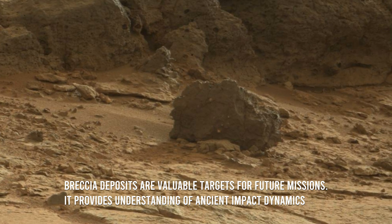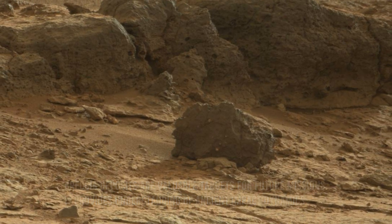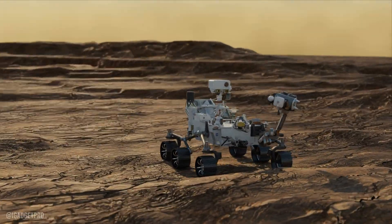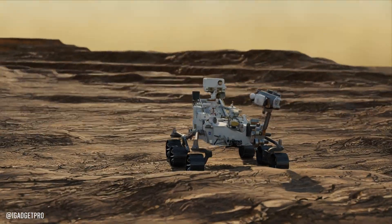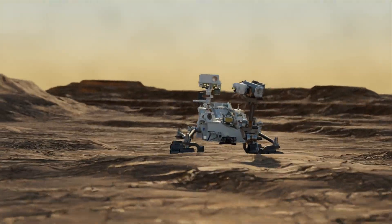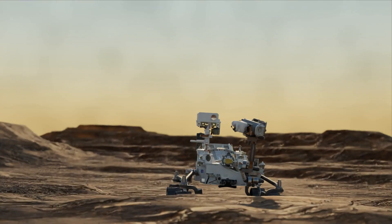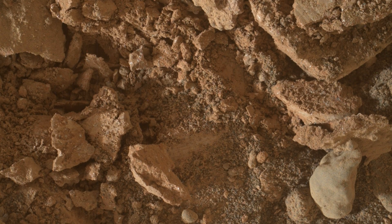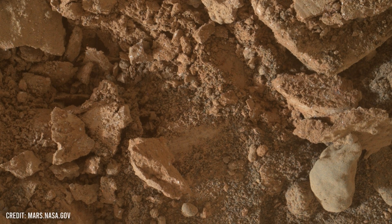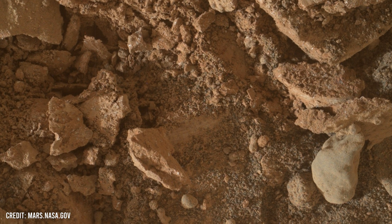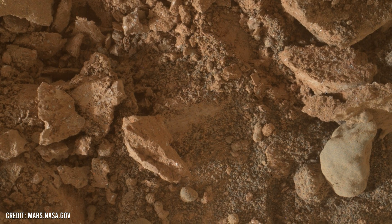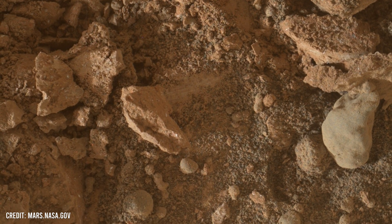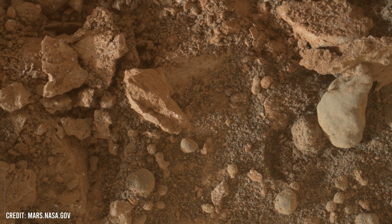Impact pressure rocks are not evenly distributed across the Martian surface. These rocks may have preserved traces of past Martian life or organic molecules within their protective matrix. Scientists are eager to study them in greater detail to unlock the mysteries of Mars and its potential for harboring life.